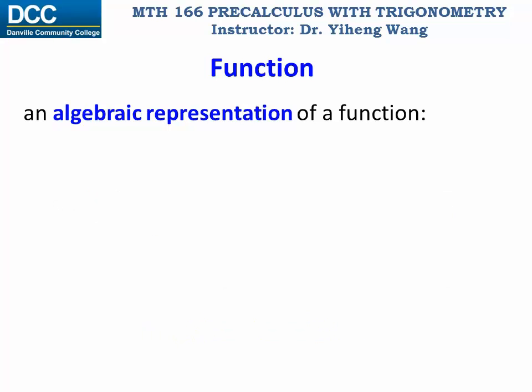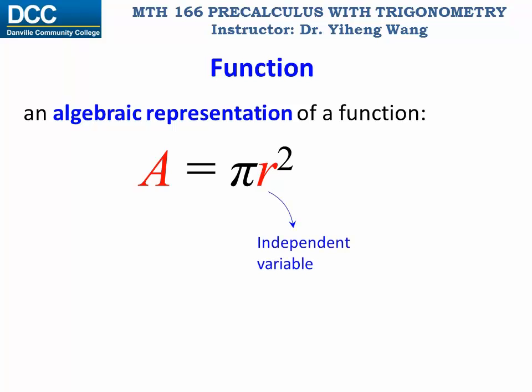Also, a function can be represented by an algebraic equation. For example, here is a formula we are very familiar with: A equals pi times r squared. You know that this is an equation to calculate the area of a circle based on its radius. But if you look at it as a function, this equation presents a relation between the radius r and the area a, and how the area of the circle depends on the radius. So this is a function with independent variable radius and dependent variable area. In this class, we will mostly focus on this type of functions that can be described by equations.